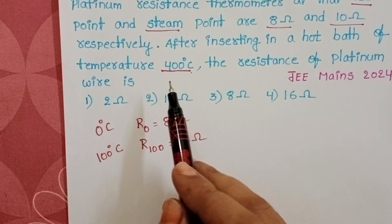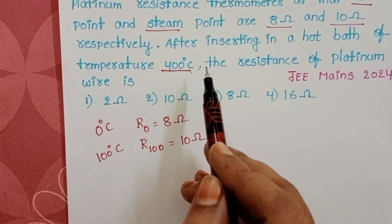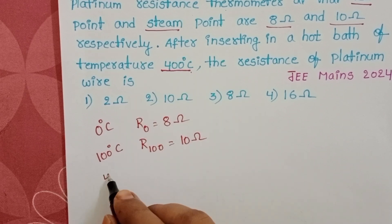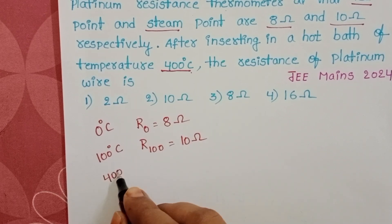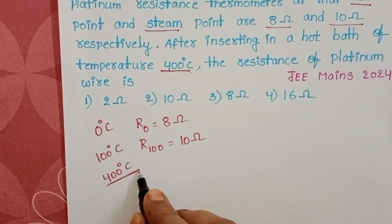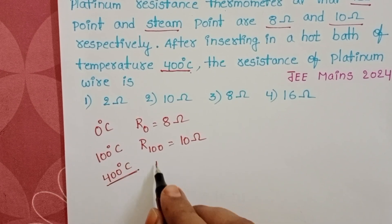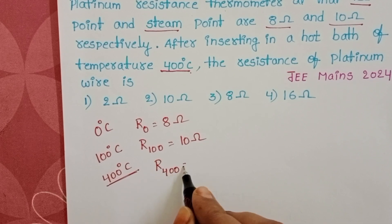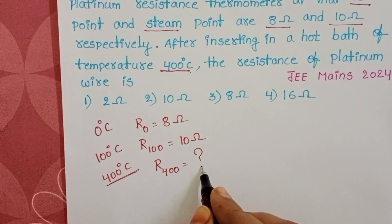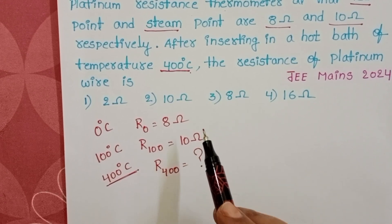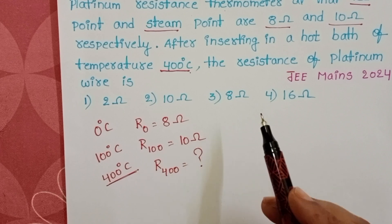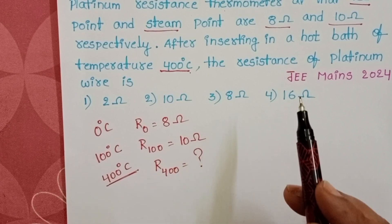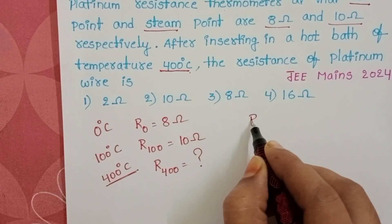After that, the thermometer is inserted into the hot path where the temperature rises to 400 degree Celsius. At this temperature we want the resistance of the platinum thermometer. Since resistance depends upon the temperature, the relation between resistance and temperature is used.